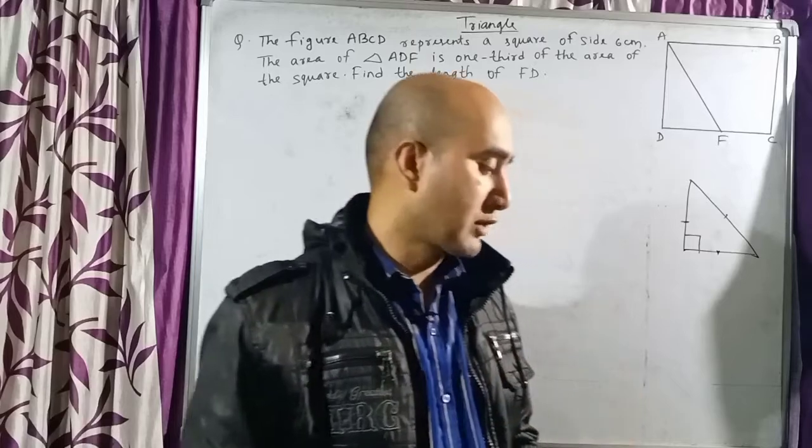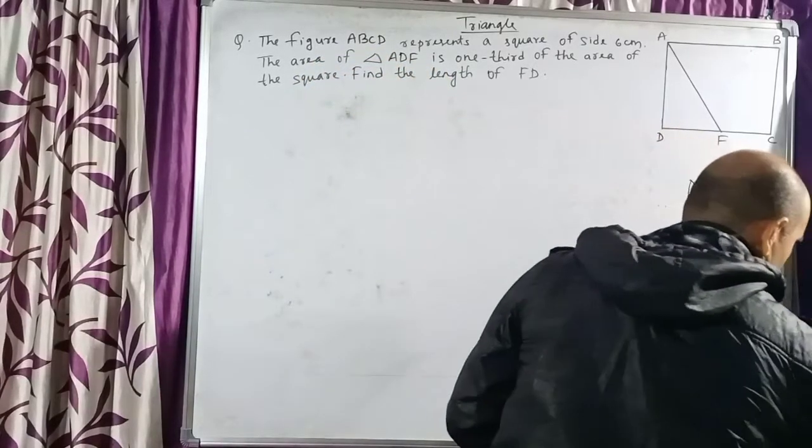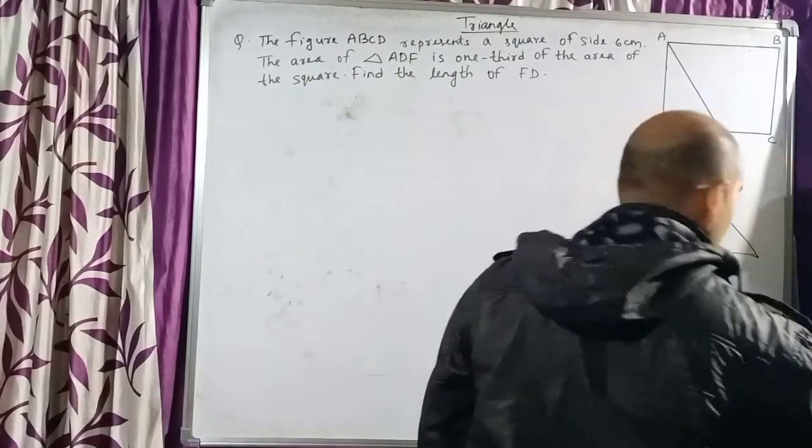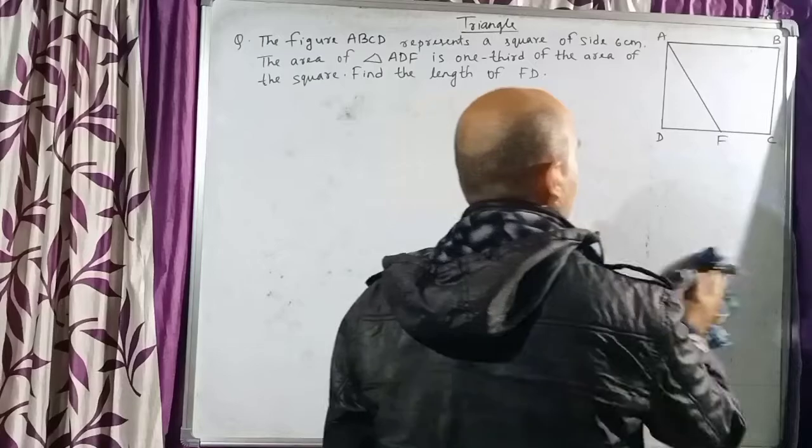We have learned several times that the area of a right-angled triangle is half into base into height. Based on this formula, today I have a question for us to discuss, written on the whiteboard.